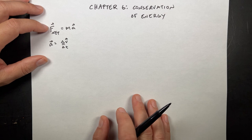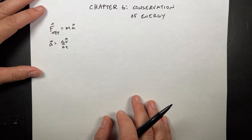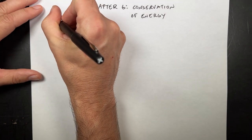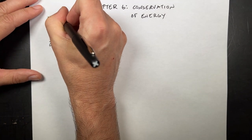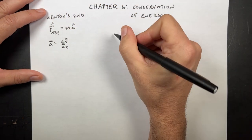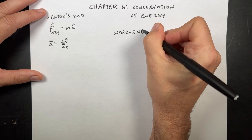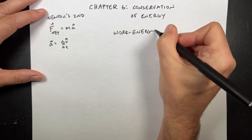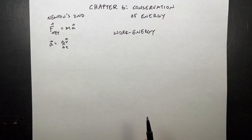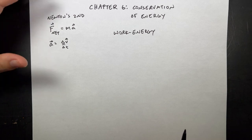It turns out there's another way to model and predict the motion of objects, and that's using the work-energy principle. We'll write this as Newton's second law. We also have the work-energy principle. We have two things to talk about in terms of work-energy: the first is work, and the second is energy.